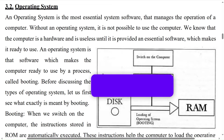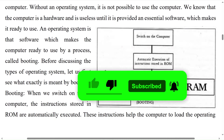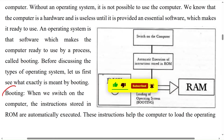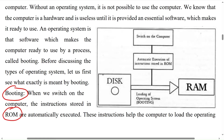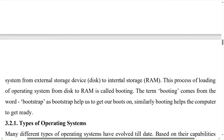Before discussing the types of operating system, let us first understand what exactly is meant by booting. When we switch on the computer, the instructions stored in the ROM — Read Only Memory — are automatically executed. These instructions help the computer to load the operating system from an external storage device (disk) to internal storage, that is RAM — Random Access Memory. This process of loading the operating system from disk to RAM is called booting.